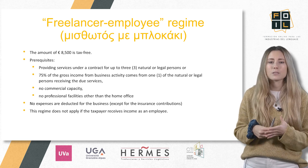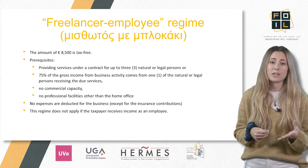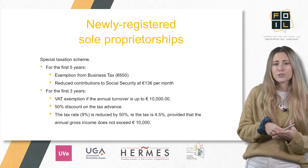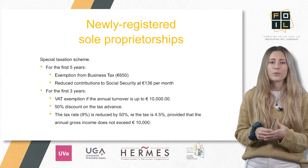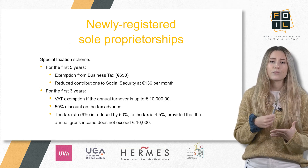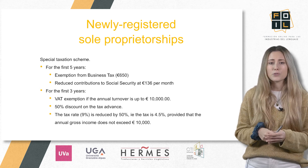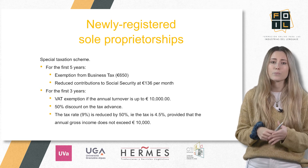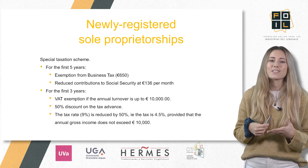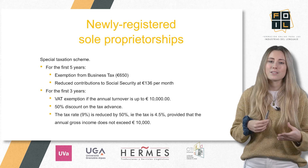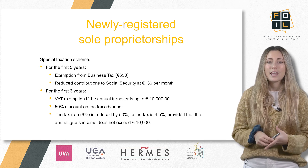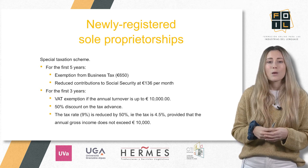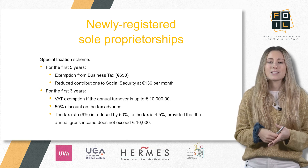This regime does not apply if the taxpayer is an employee who obtains income from paid work. Another special taxation regime is the one for newly registered sole proprietorships. Under this scheme, for the first five years, there is an exemption from the business tax of €650 and reduced contributions to Social Security at €136 per month. Also, for the first three years, there is a VAT exemption, a 50% discount on the tax advance, and the tax rate is reduced by 50% — for example, the tax is 4.5% — provided that the annual gross income does not exceed €10,000.